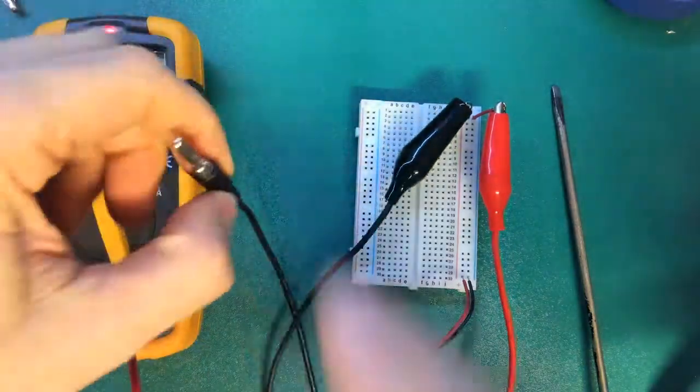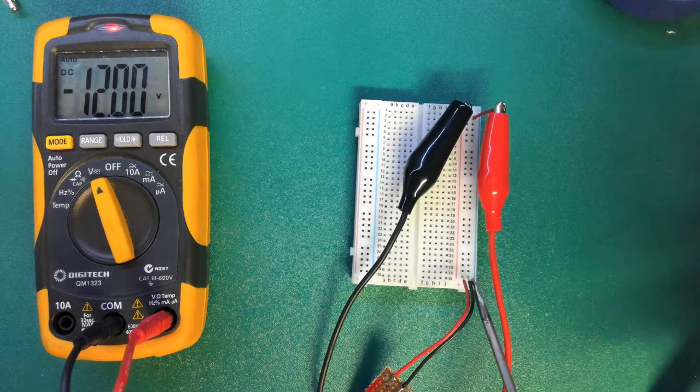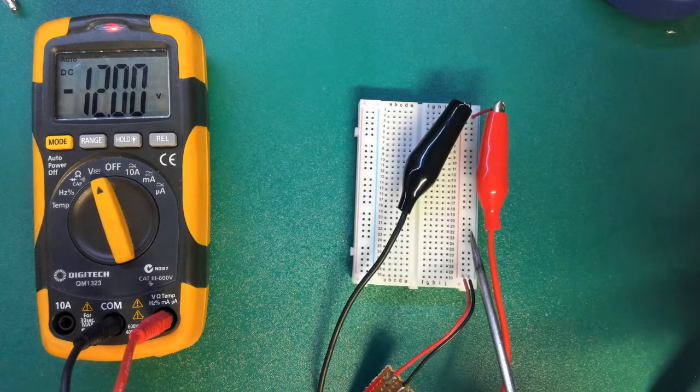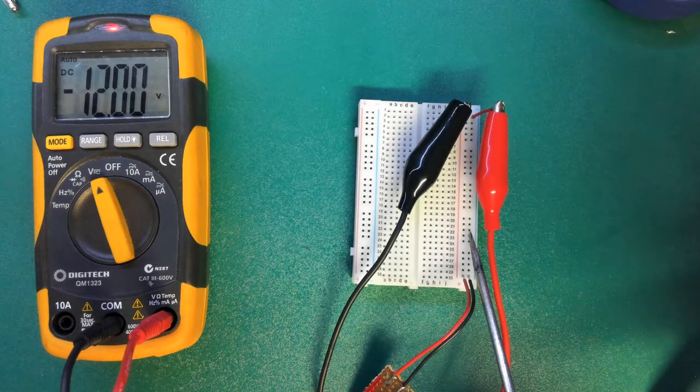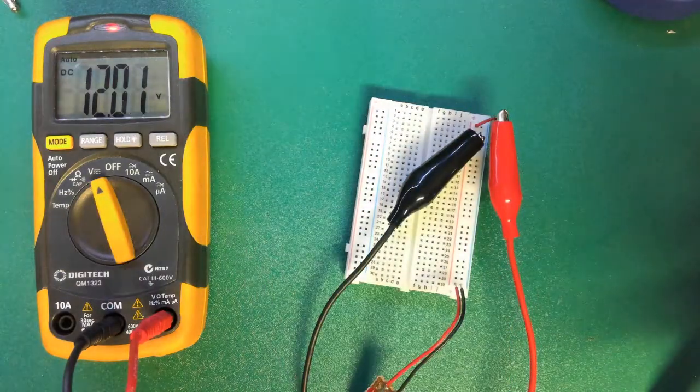Same as before you need to plug your probes in. So here we've got a black wire going down our ground power rail and we've got the red wire on the end. Here we are measuring 12 volts.